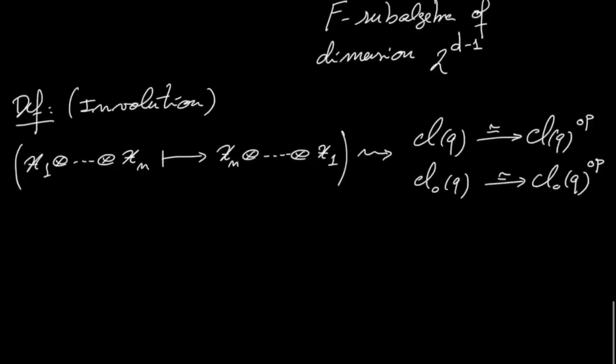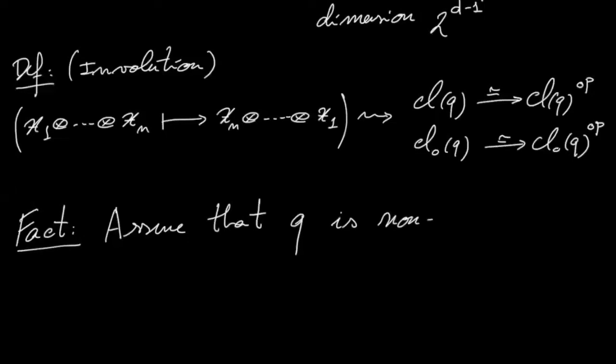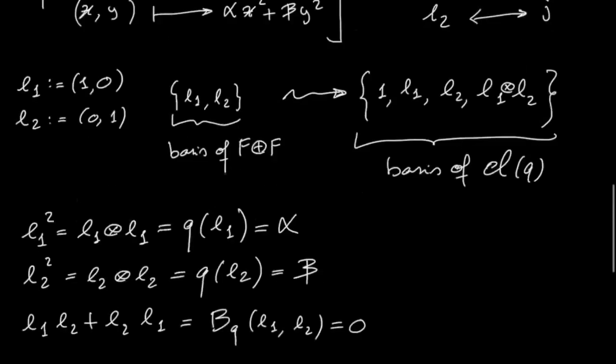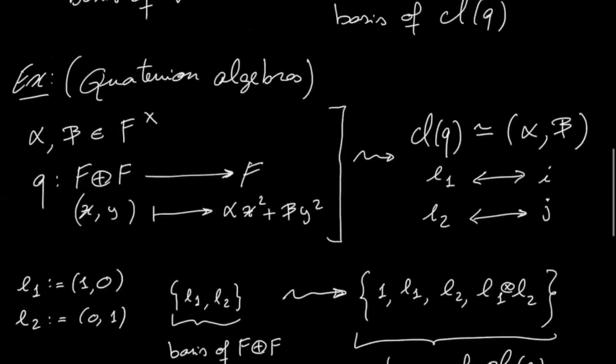So the important fact is the following, is that let's assume that the quadratic form is non-degenerate. So non-degenerate, as is the case, for example, in our example here of quaternion algebras. So what does it mean to be non-degenerate?